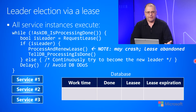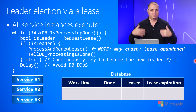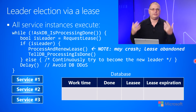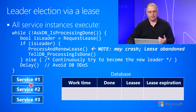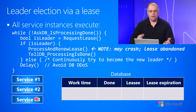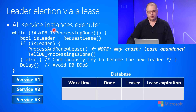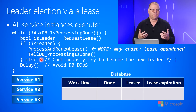The first way to do leader election is via a lease mechanism. With this mechanism, all service instances are constantly hoping that they will be the leader by executing code very similar to what I show here. So let's say we have three instances of our service running. All three instances are executing this same code in a loop, and eventually one of them will be the leader.